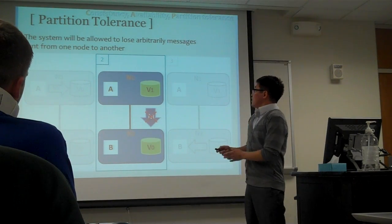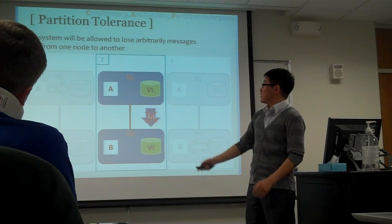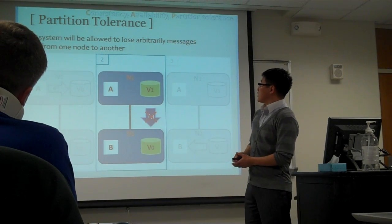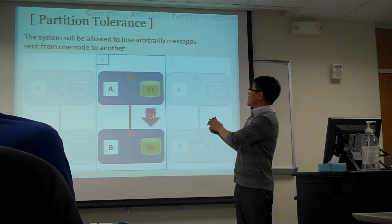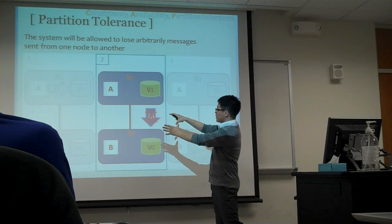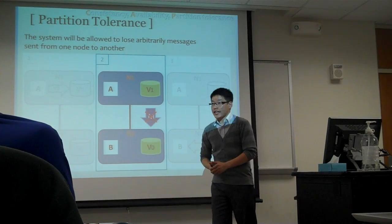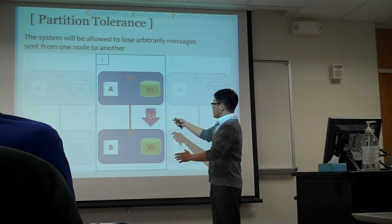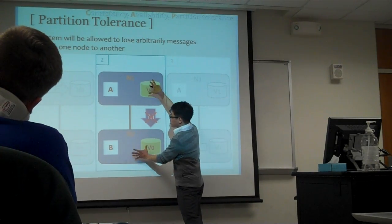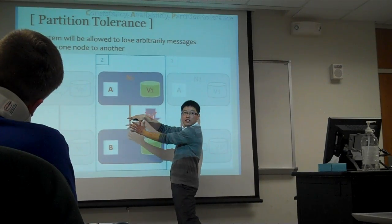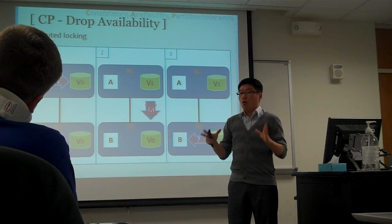Partition tolerance. According to the two authors who proved Brewer's conjecture, they define partition tolerance as the system being allowed to lose messages. Which means if the system has guaranteed partition tolerance, then it can be distributed based on the network — but remember, messages can be lost. But if the system does not guarantee partition tolerance, then the system will not allow message loss, so both components can be centralized.